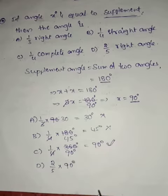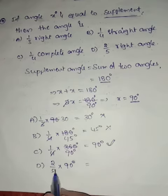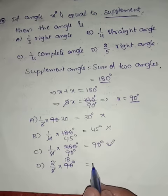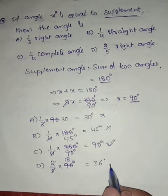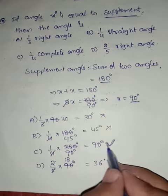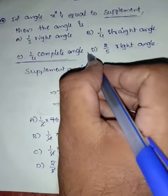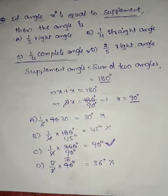Option D: 2/5 right angle means 2/5 of 90 degrees. Calculating: 90 divided by 5 is 18, and 18 times 2 equals 36 degrees. That does not satisfy the condition, so option C is the right answer.